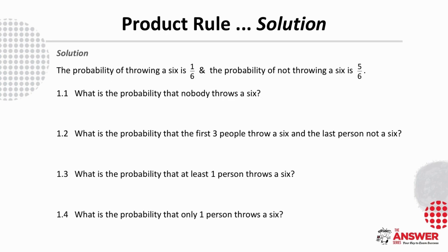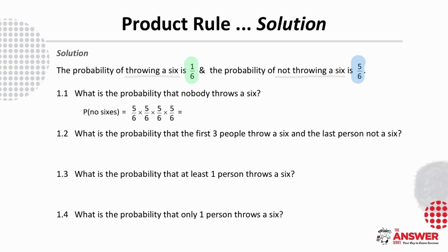To determine these probabilities, let's first establish that the probability of throwing a 6 is 1/6, and the probability of not throwing a 6 is 5/6. We find the probability that nobody throws a 6 by finding the product of the probabilities of each person not throwing a 6, which is 48.2%.